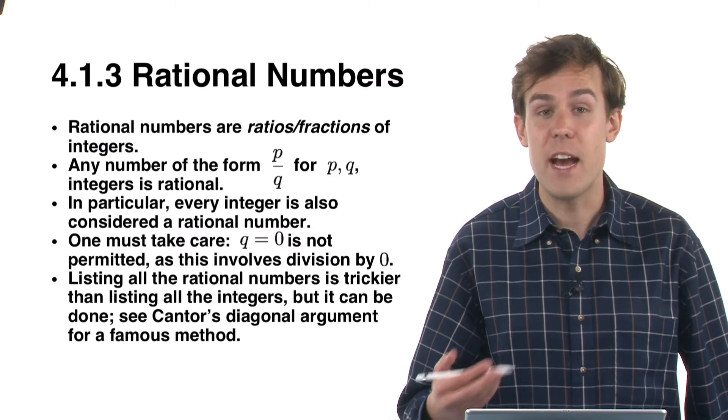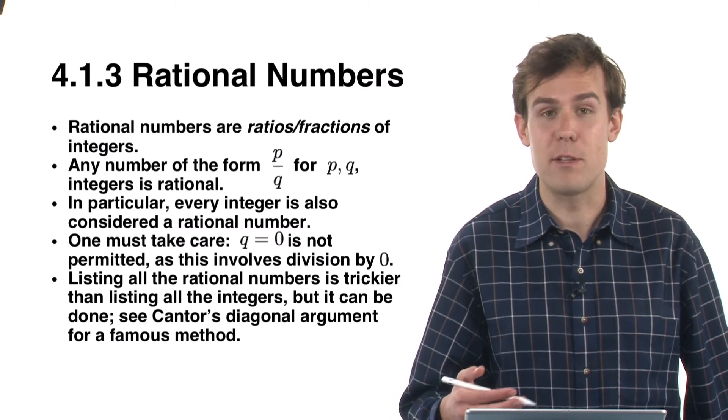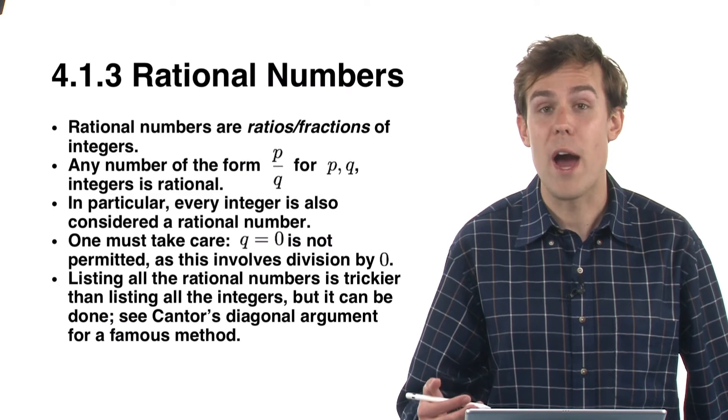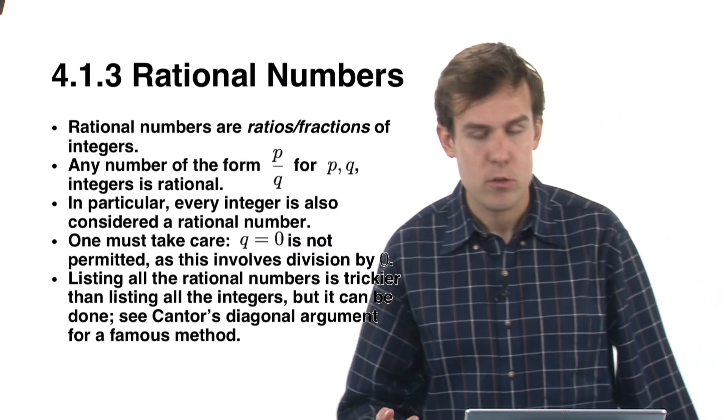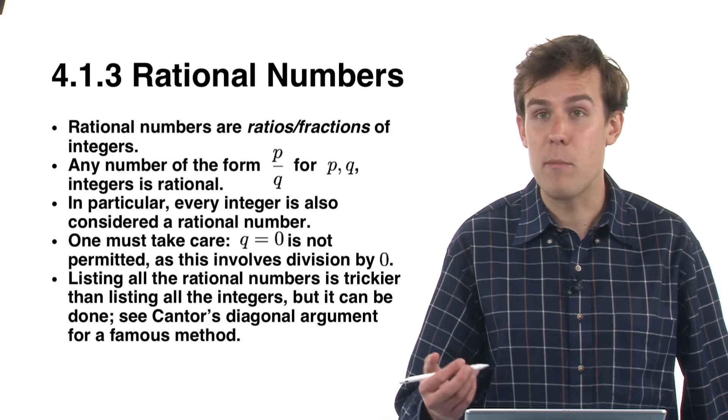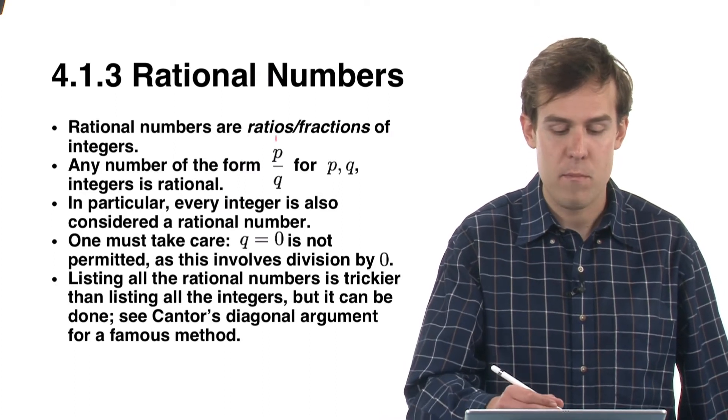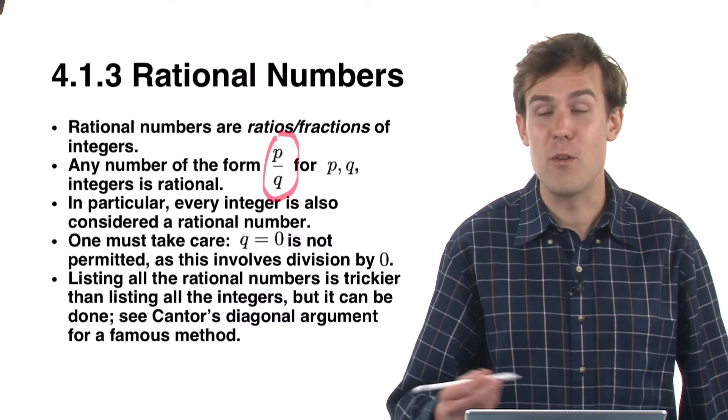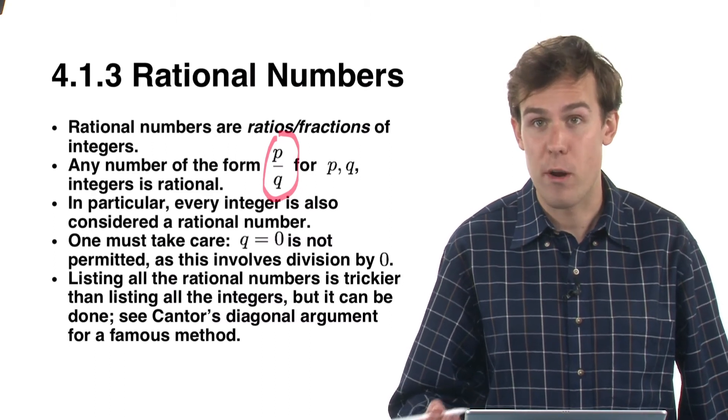After the integers, the next most fundamental subset of the real numbers are the rational numbers. These are essentially fractions of integers. Any number that can be written of the form p over q, for p and q integers, is what's called a rational number.